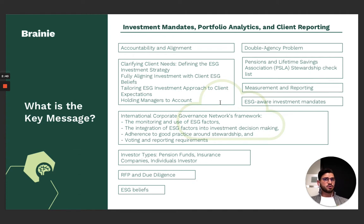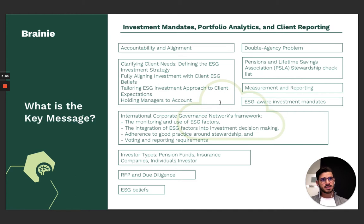There are some core tenants you need to understand. The core tenants are: clarifying client needs, which is defining the ESG investment strategy; then fully aligning investment with client ESG beliefs; tailoring the ESG investment approach to client expectations; and holding managers to account. The chapter then walks you through each of these steps in full detail.